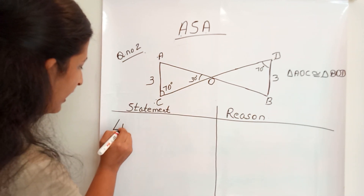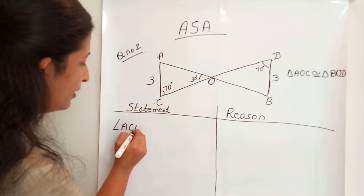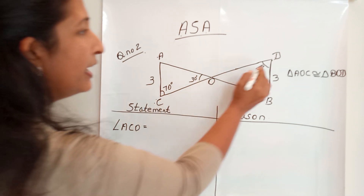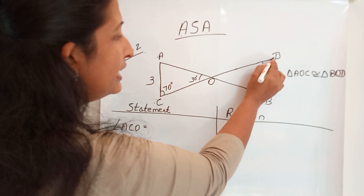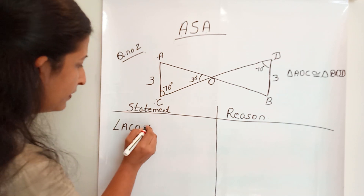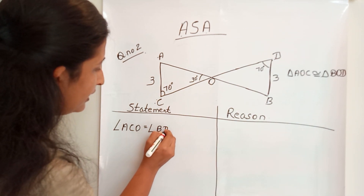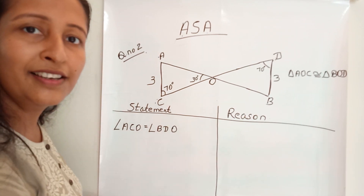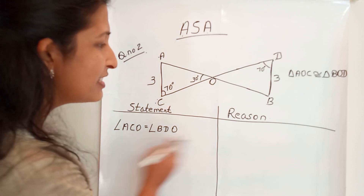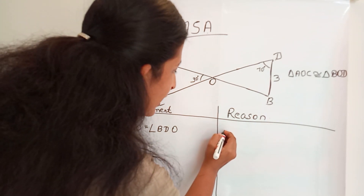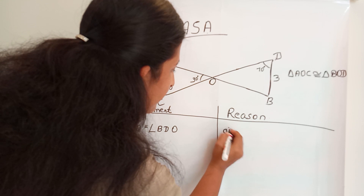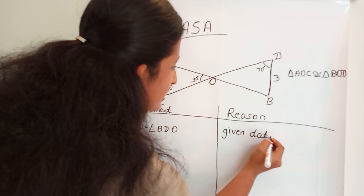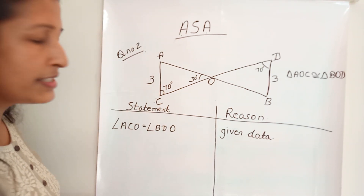When solving a proof problem like this, you should write the statement on the left and the reason on the right. Statement 1: angle ACO is equal to angle BDO. What is the reason? This is the given data, so the reason is: given.